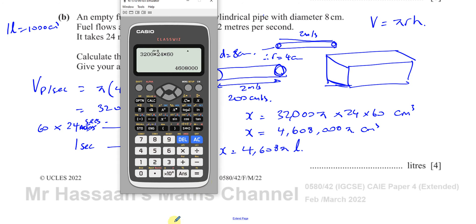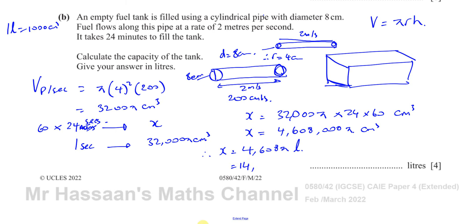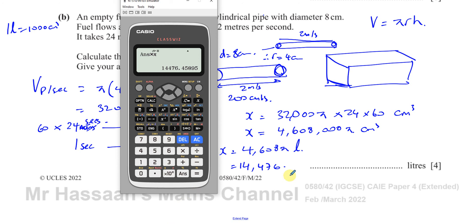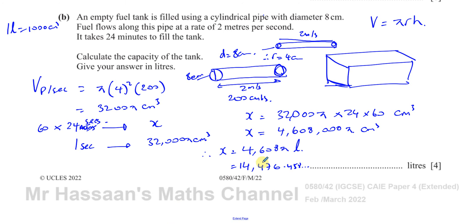Multiplying 4608 by π gives approximately 14,476.45 liters. Rounding to 3 significant figures, the capacity of the tank is 14,500 liters.